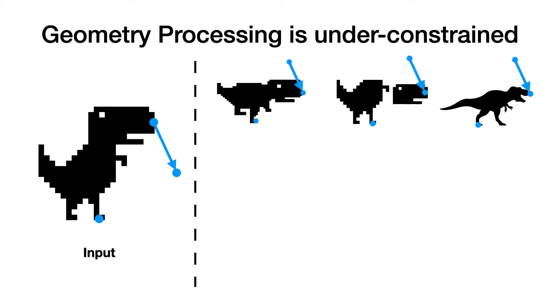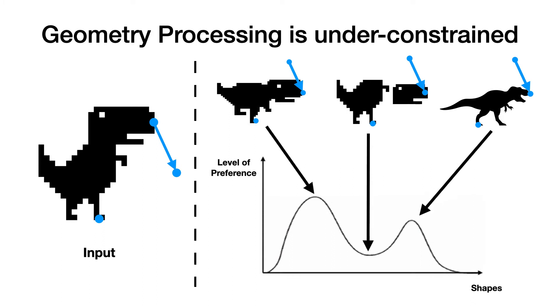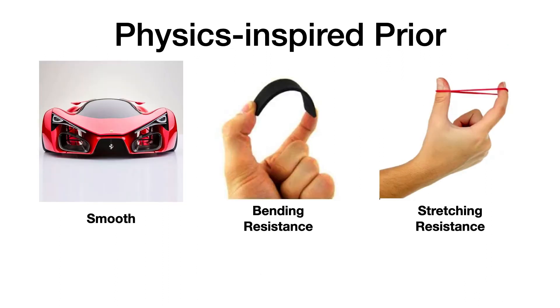For example, all of these shapes fulfill the user specification, but some are better candidates than others. To navigate among these possibilities, algorithms need to encode some sort of priors that prefer one shape over the others.